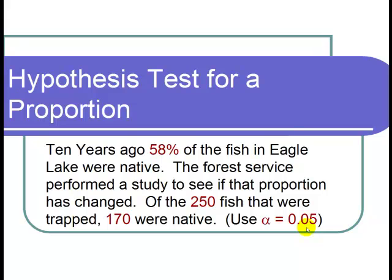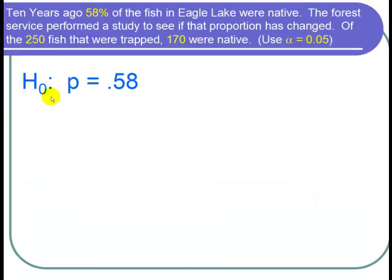So let's start by writing down the null hypothesis. Since we want to see if the proportion of the fish has changed from 0.58, then H0 is that the population proportion is equal to 0.58.